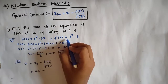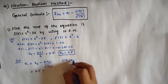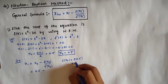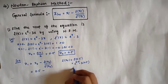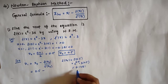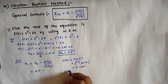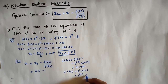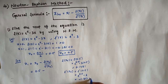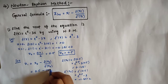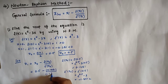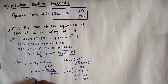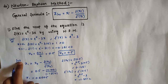f(x₀) = f(0.5) = e^0.5 minus 3×0.5 = 0.1481. For f'(x₀): f'(0.5) = e^0.5 minus 3 = minus 1.3512. Substituting these values: x₁ = 0.5 minus (0.1481 / minus 1.3512), giving x₁ = 0.61005.